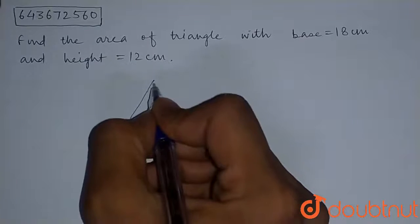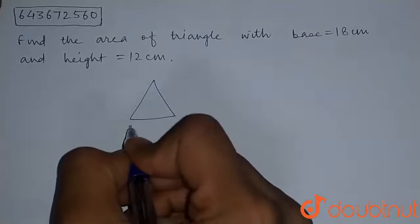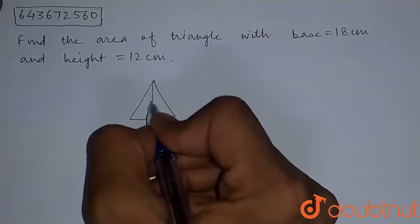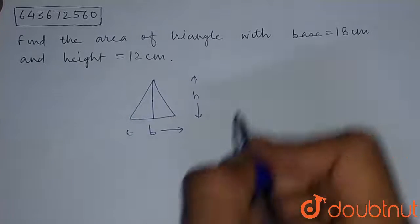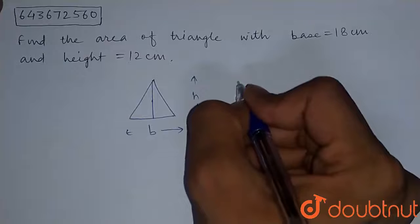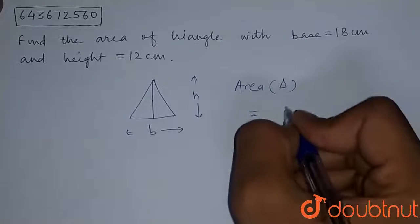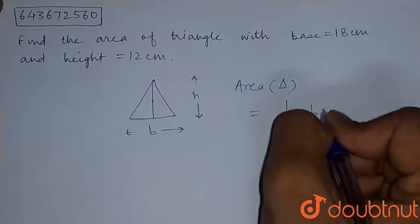So if we are given a triangle that is having a base b and height h, the area of triangle can be found by: area of triangle equals half times base times height.